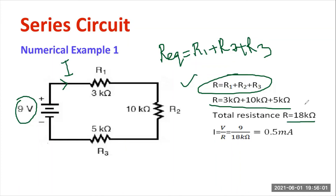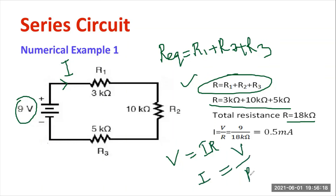Now I need to compute the value of current according to Ohm's law. V equals I times R, so from this expression, I equals voltage divided by resistance. The voltage is 9 volts, and the resistance is 18 kilohms, or 18 times 10 to the power 3 ohms.